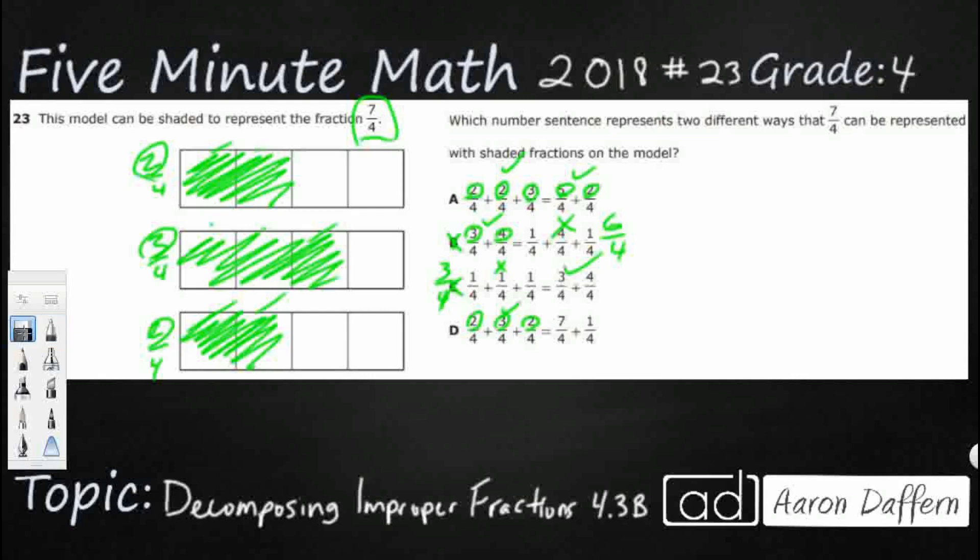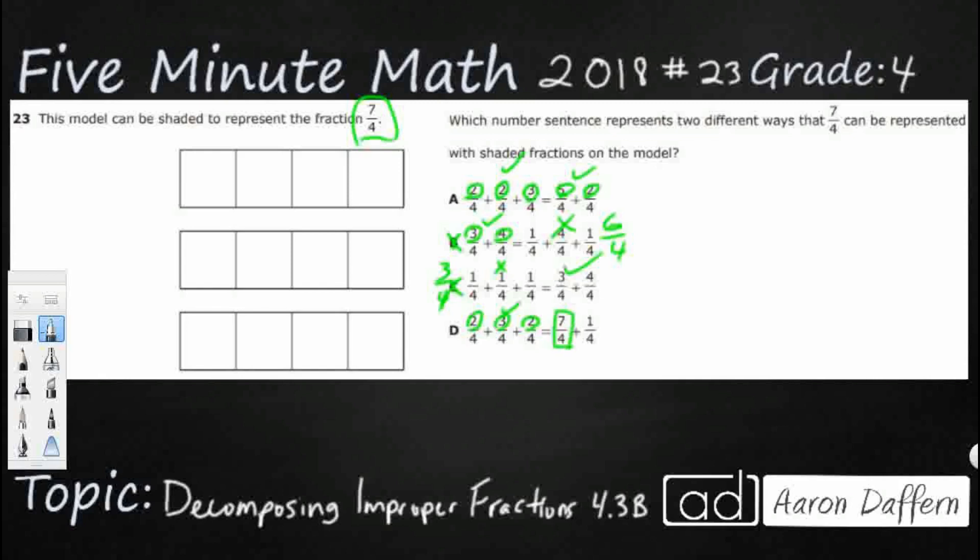So our issue is most likely going to be with that second part. And as we take a look at it, even without, we'll put it on here, but even without looking at it, look, you've started, you're starting with 7 fourths. That's what we're trying to get to. That's our goal. So the second you add something on top of it, you know it's not equal to 7 fourths. You can't add something to 7 fourths and have it be 7 fourths.